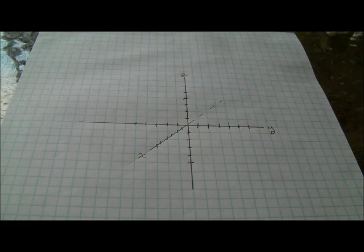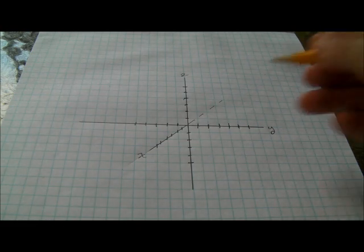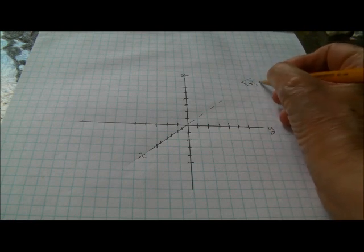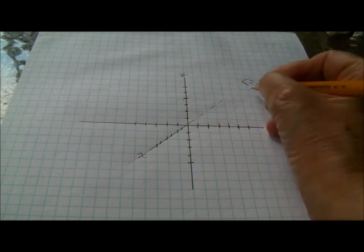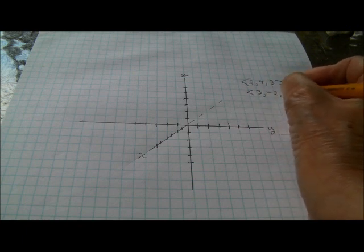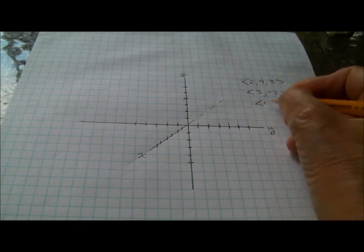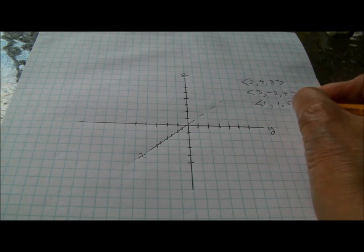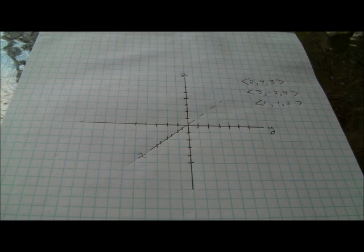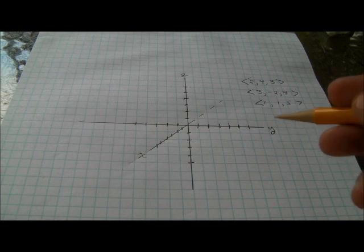Okay, so I'm going to show you how to draw a parallelepiped, and for our example we're going to have vector 2, 4, 3, vector 3, negative 2, 4, and 1, 1, 5 as our three vectors that determine the parallelepiped that I'm going to draw. Now you might want to use a ruler, but that would obscure what I'm doing, so I'm not going to use a ruler, I'm just going to have to go for it by hand.